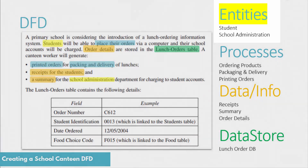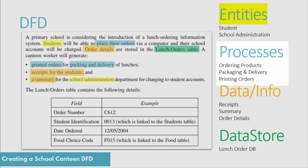Once we have the entities, we need to worry about the processes. Processes are things that are done within the system. The first process is when students place their orders — students ordering products would be a process. We also have printing of the orders as well as packing and delivery. So there are three main processes.